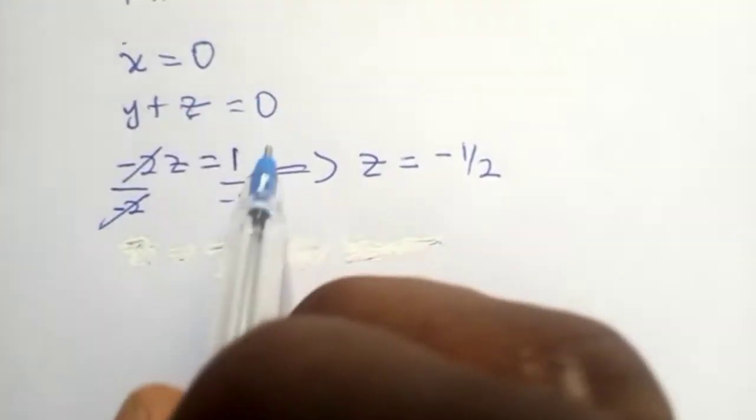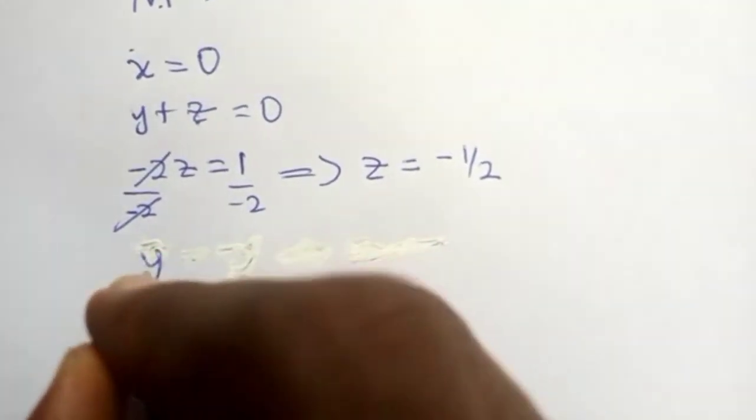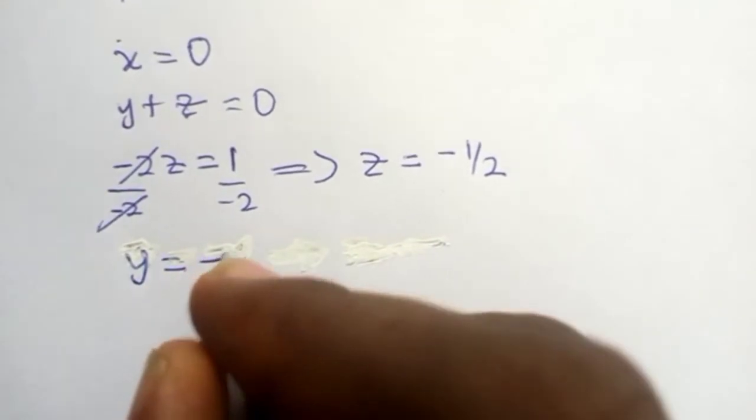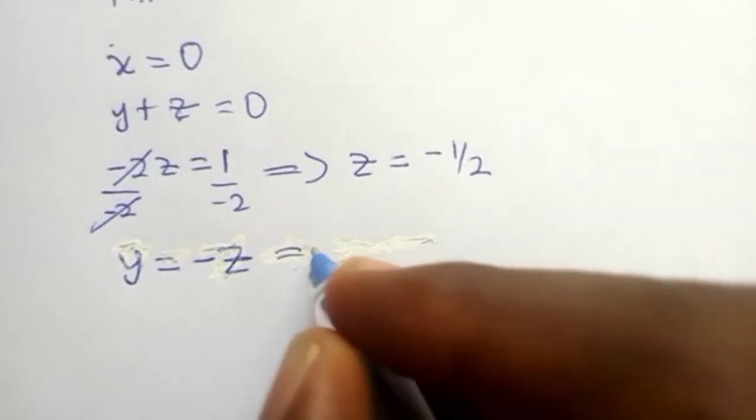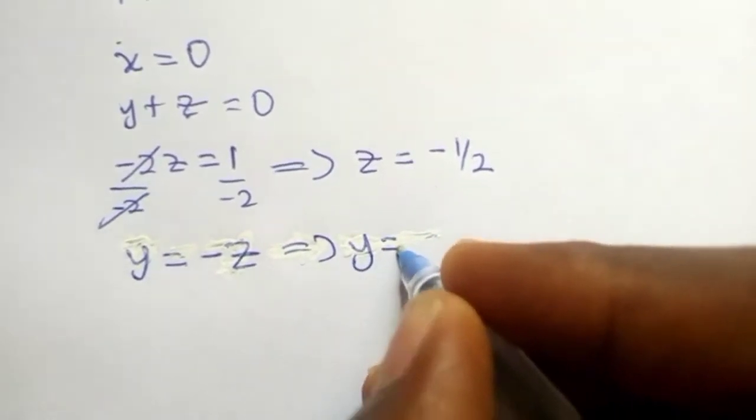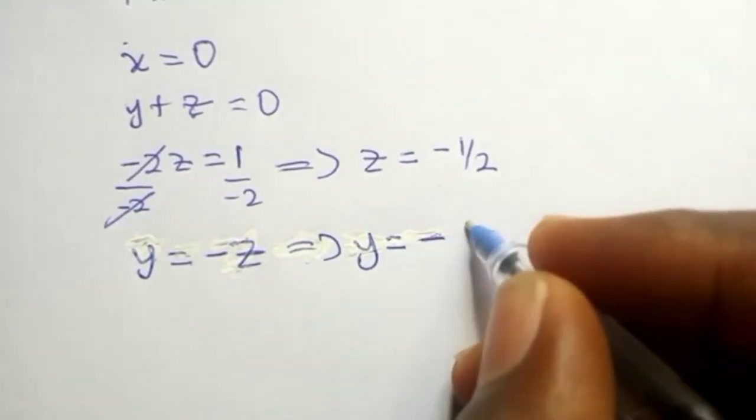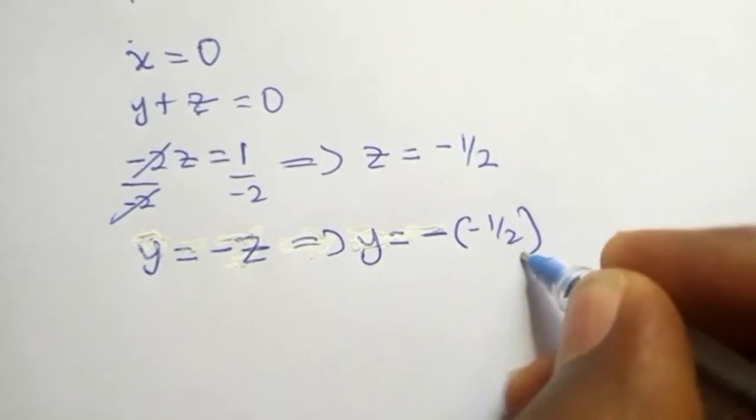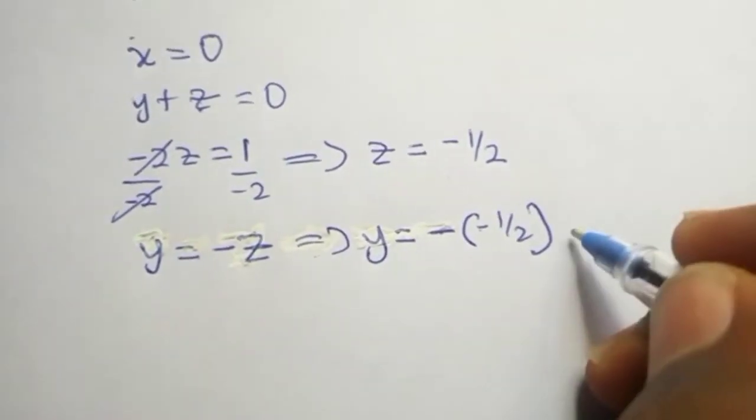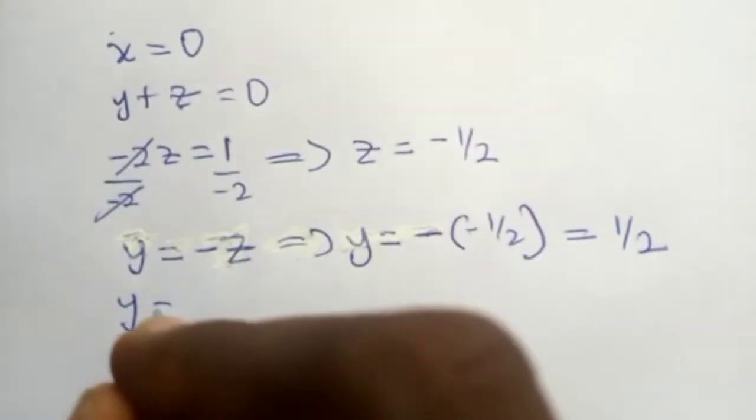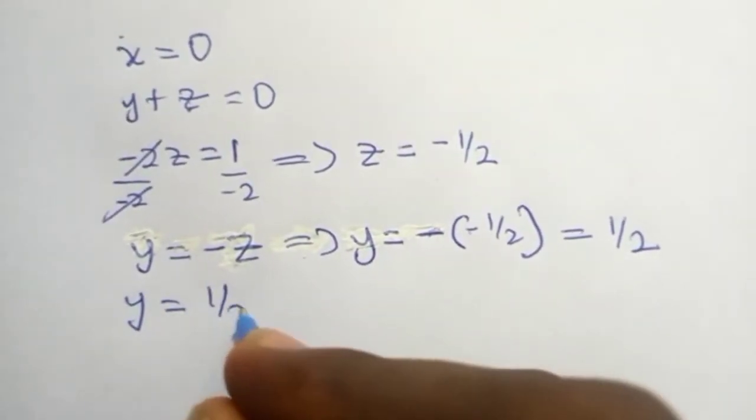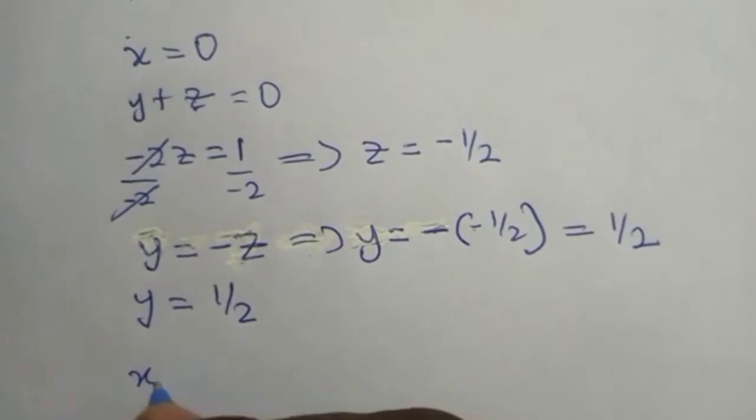We have our x to be 0, our z to be negative 1 over 2. We can easily get our y from equation 2. We take z to the other side: y equals negative z. Z is minus 1 over 2, so minus times minus is plus. Y equals 1 over 2. We've gotten x equals 0, y equals 1 over 2, and z equals minus 1 over 2.